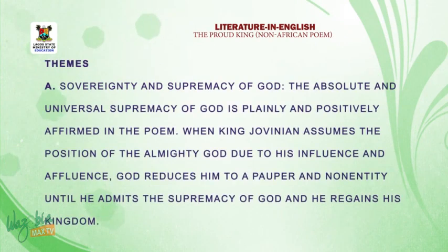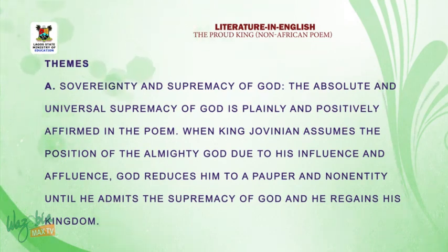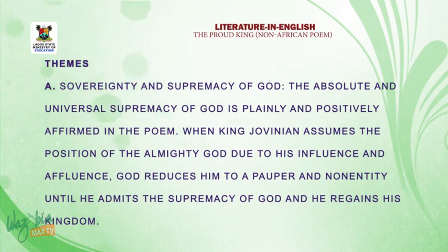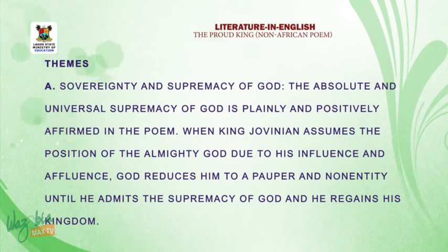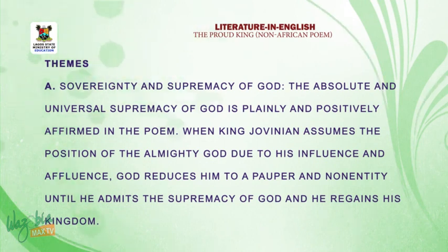We want to consider first the theme of sovereignty and supremacy of God. The absolute and universal supremacy of God is plainly and positively affirmed in several stanzas of this poem. God's supremacy over the work of his hand is vividly depicted in the angelic speech: 'Thou hast learned how great a God is, who from the heavens countless rebels drive.' Divine sovereignty means God is on the throne, piloting all affairs according to the counsel of his own will.